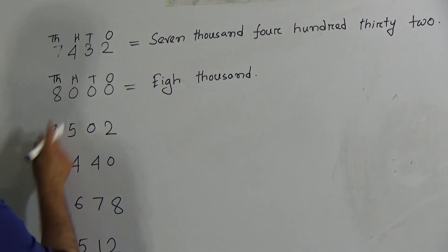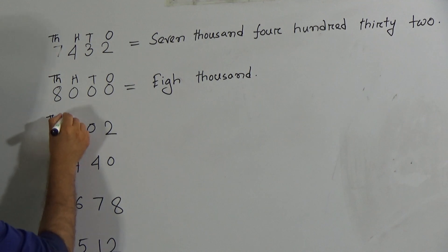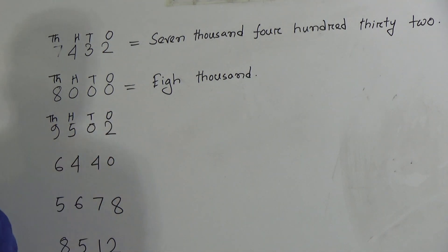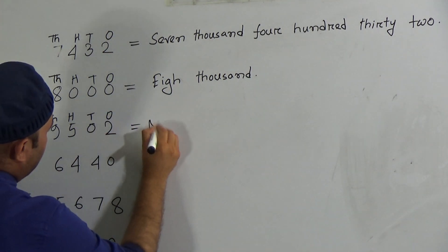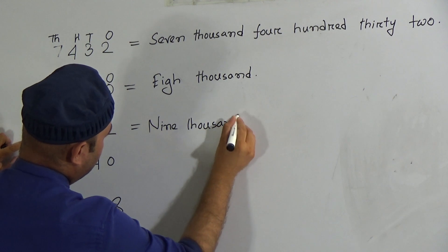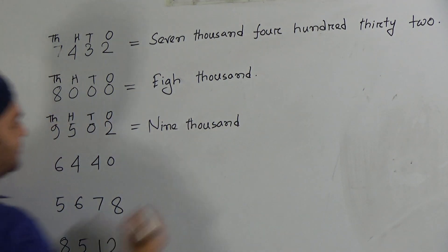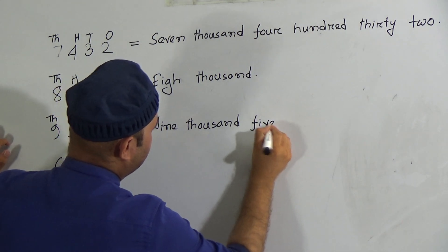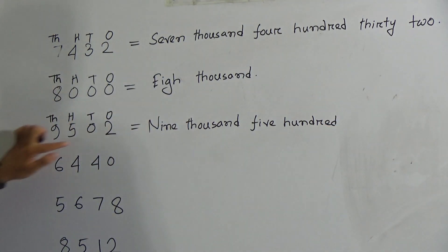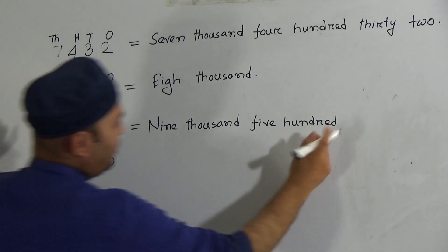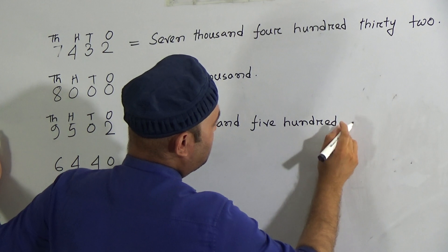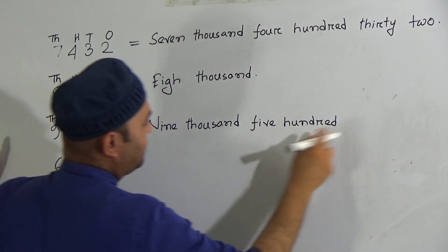The next number is 9,502. Nine is in the thousand place, five is in the hundred place, zero is in the tens place — so no need to write the tens — and two is in the ones place. So in words we write nine thousand five hundred two.